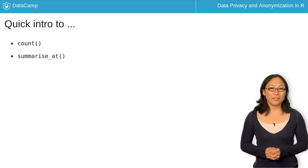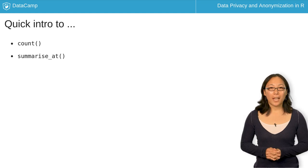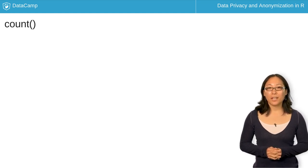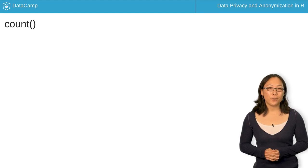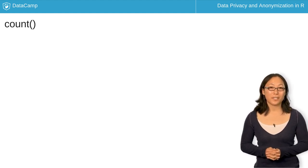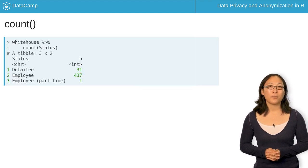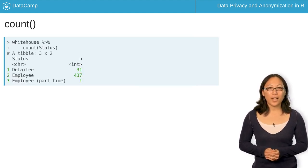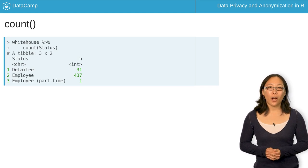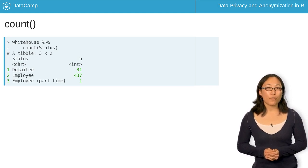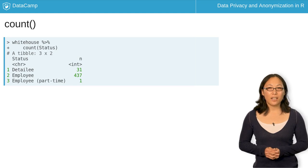Before we proceed any further, let's discuss two dplyr functions that you'll be using often in this course: count and summarize_at. Count can be used when you want to find the number of observations for all distinct groups in the data. For example, if you want to know the number of people in each category of status, you can pipe Whitehouse into count of status. Here you are counting the number of rows for each unique value in status. The result has two columns: the status column has one row for each unique category in status, and n is the number of people in each category.